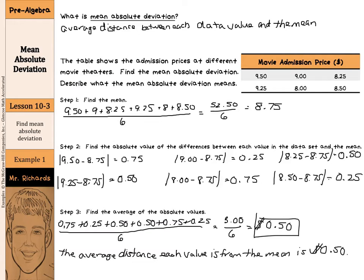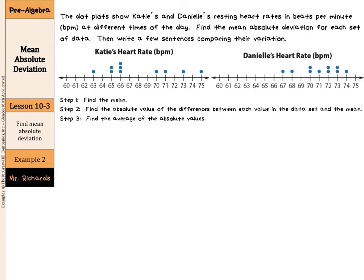That's how you calculate mean absolute deviation. In our second example, we're going to take a look at comparing mean absolute deviations. The dot plots show Katie's and Danielle's resting heart rates in beats per minute at different times of the day. Find the mean absolute deviation for each set of data, then write a few sentences comparing their variation. We have Katie's heart rate on the left and Danielle's on the right, and we'll go through our three steps to calculate the mean deviation for each.